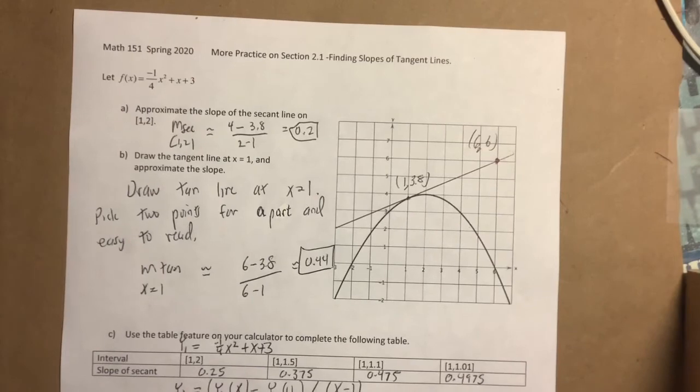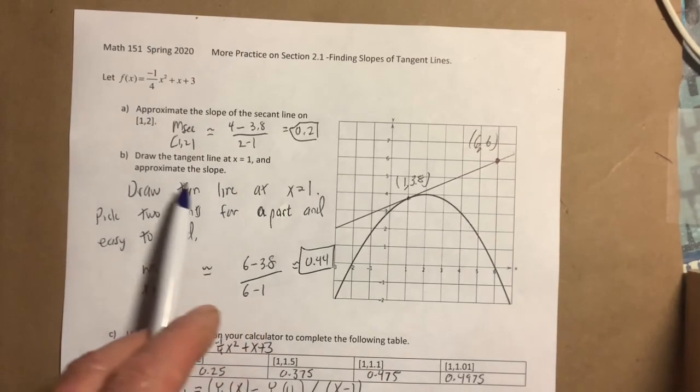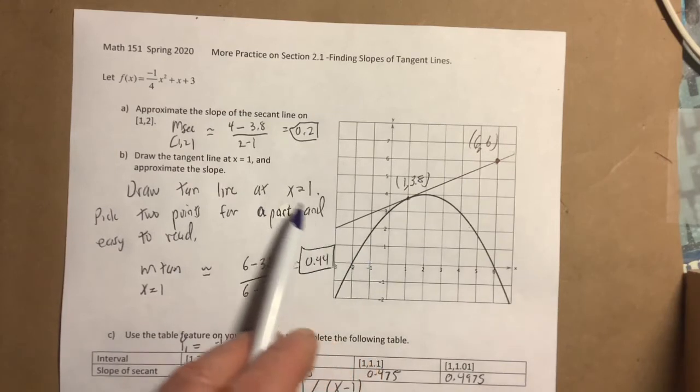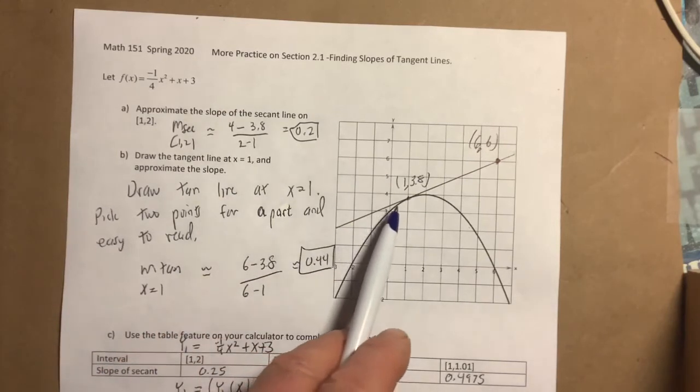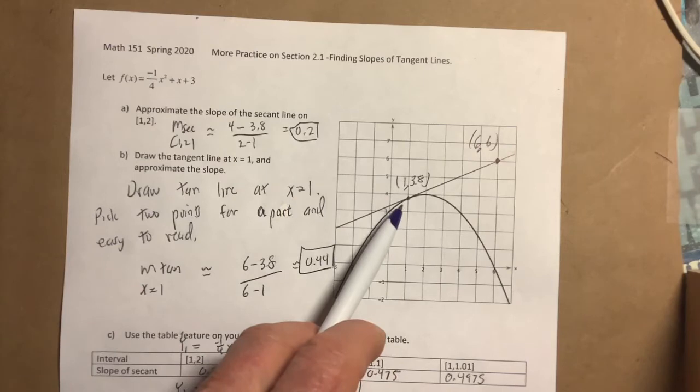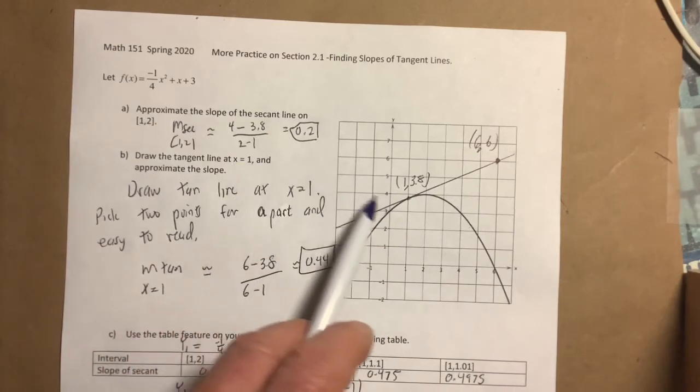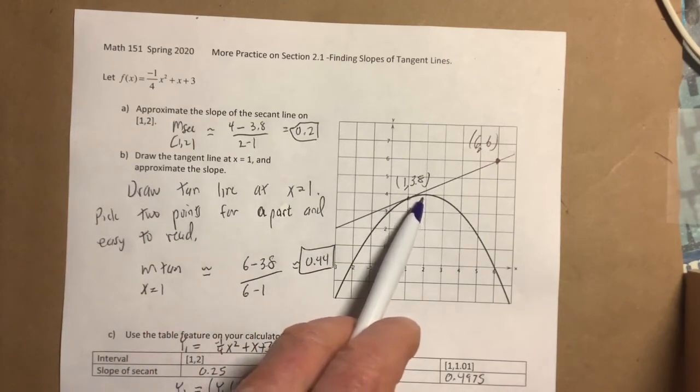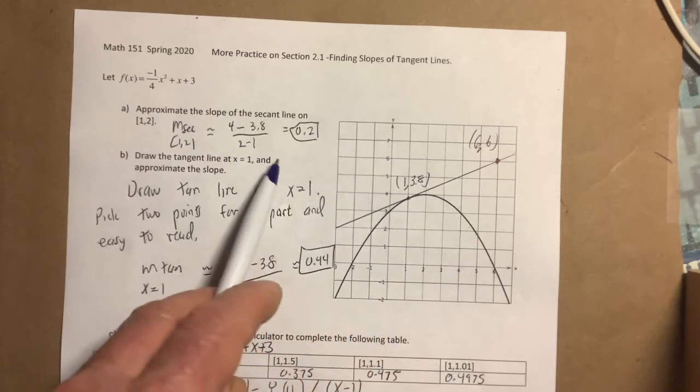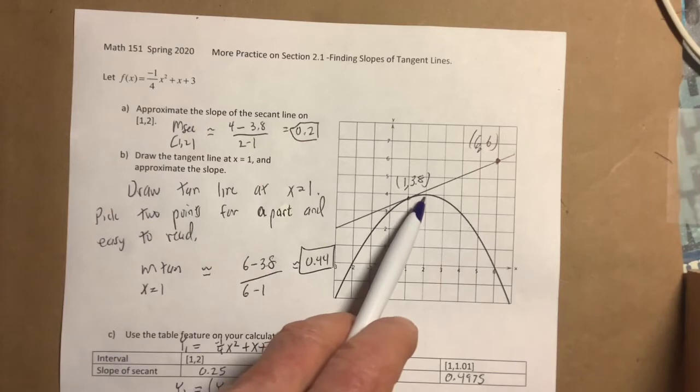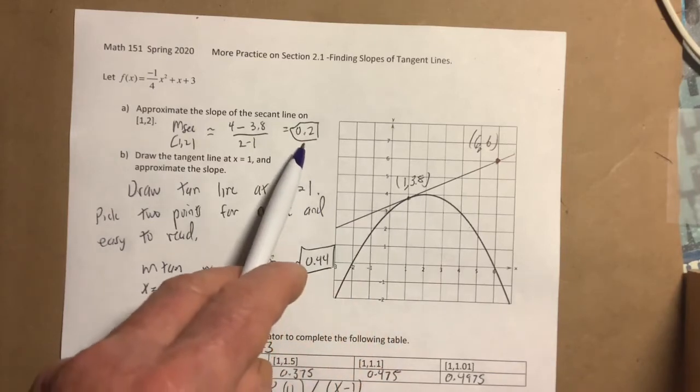In this case, the first thing you want to do is approximate the slope of the secant line using the graph. Plot the point at x equals one—it's either three point seven or three point eight, I'm gonna say three point eight approximately, and the y-coordinate looks like about four. So this is the point (1, 3.8) and this is the point (2, 4). The secant line goes from here to there, so I get a slope of about 0.2.